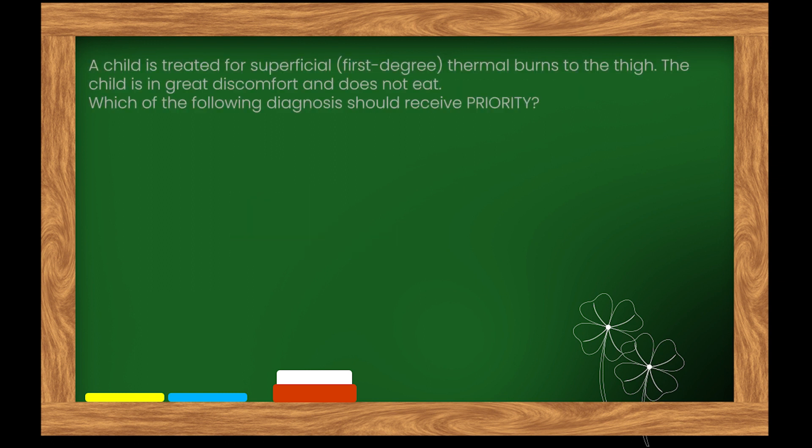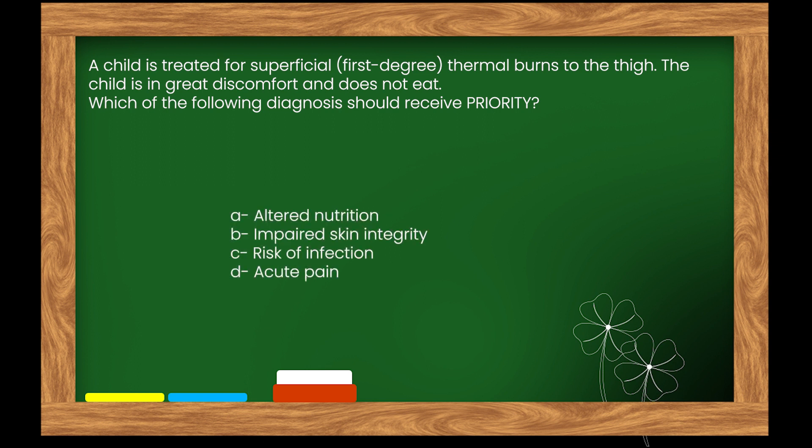Here is our next question. A child is treated for superficial first-degree thermal burns to the thigh. The child is in great discomfort and does not eat. Which of the following diagnoses should receive priority? Options: A. Altered nutrition. B. Impaired skin integrity. C. Risk of infection. D. Acute pain.